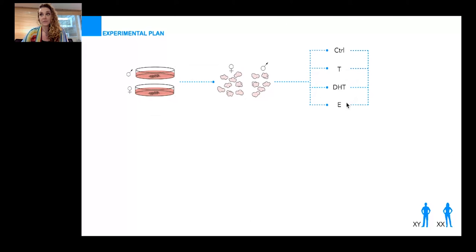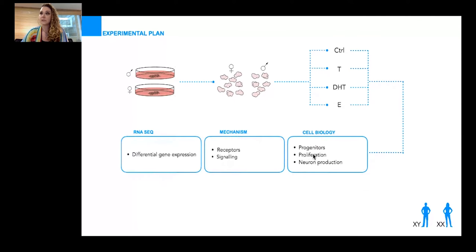Normally testosterone can be aromatized into estrogen and exert its function like this, but DHT cannot. We assessed the hormones' effects on cell biology of progenitors, their proliferation and neuron production, on their mechanism—receptors and signaling. I will not talk about this today but you can ask me later. We were interested in any potential differential gene expression that might occur.